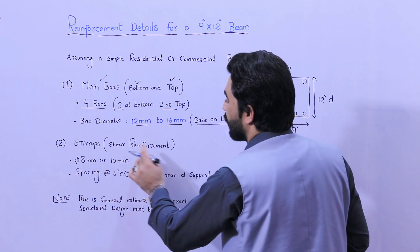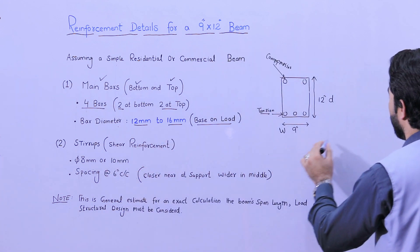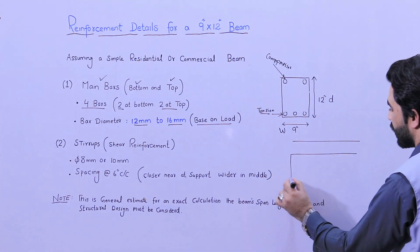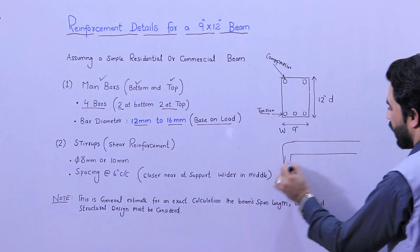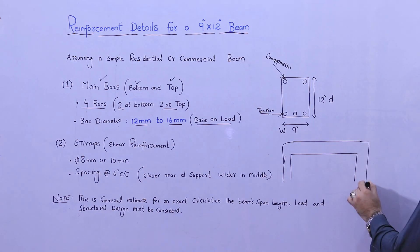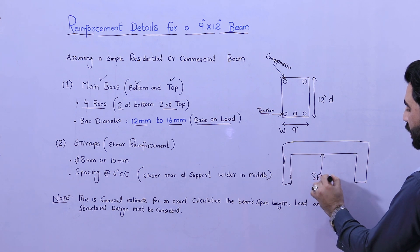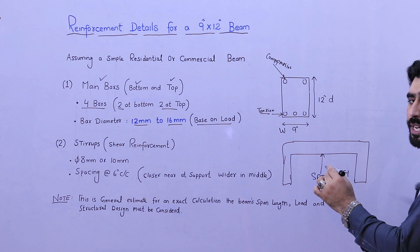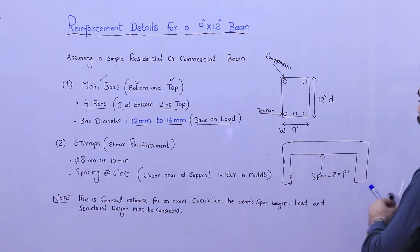The next one is stirrups or shear reinforcement. Now let me make a long section for this beam. You can see this is column, and here this is other column, and this is beam. First of all, it depends on the span between two columns. Suppose I have 20 feet. Now let me guide you for longitudinal bars. We have two bars at the top, two at the bottom.